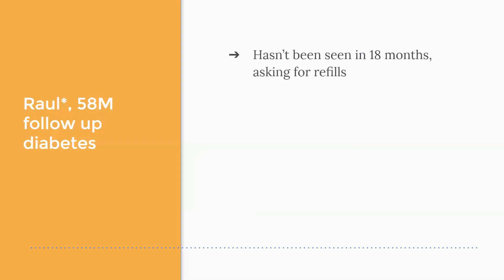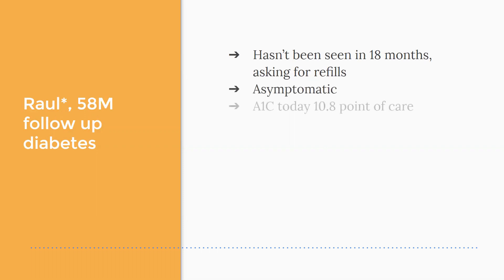He had requested a refill the month prior, but he hadn't been in the office for about 18 months. I gave him a month's worth of medication and had him schedule a follow-up appointment because I'd never met him before — I'm a new PCP for him at my new clinic. He was asymptomatic that day, just really wanted a refill. He was a little annoyed with me. The A1C point-of-care test right in the room was 10.8.